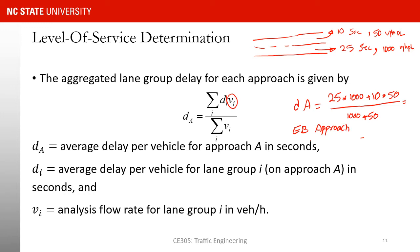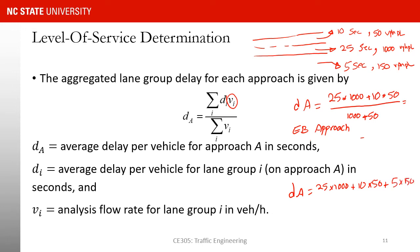What if I had another lane group — say a right turn movement with a delay of 5 seconds and a volume of 150 vehicles per hour per lane? Then my equation would change to: 25 times 1000, plus 10 times 50, plus 5 times 150, divided by the summation of all volumes.